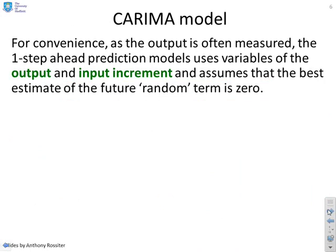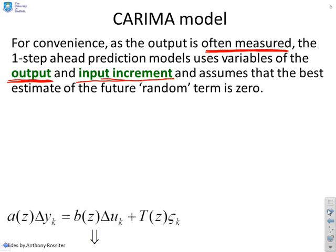For convenience, the output is often measured as its own value, not as an increment. So what we tend to do, and this is a bit of trickery, but it's just how conventions have come out, we use the actual output, not the incremental output in our model, but we use the input increment. It just makes the algebra easier. I wouldn't try and analyze it in too much detail, just accept that this is what people do.